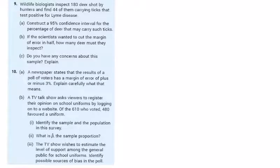More population proportion questions. Wildlife biologists inspect 180 deer shot by hunters and find 44 of them carrying ticks that test positive for the dreaded Lyme's disease. 44 over 180 is not very nice, 0.244 recurring, so we leave it at 0.244 and 0.756 will be the other side of this.